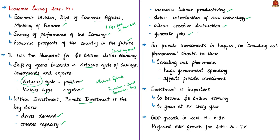Creative destruction refers to innovations in economic processes that replace old economic policies or practices in an economy or sector. For private sector investment to happen, there must be no crowding out phenomenon. Crowding out refers to a situation where huge government spending leads the government to borrow money from the private sector by selling bonds. Whatever capital the private sector had is now transferred to the government, leaving no money for private investment.